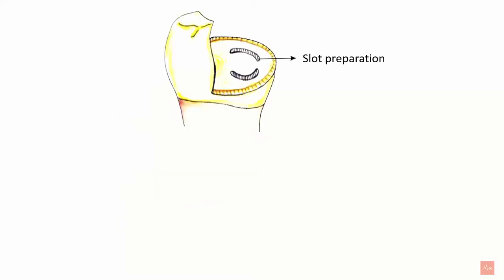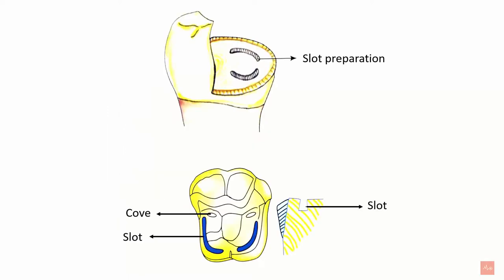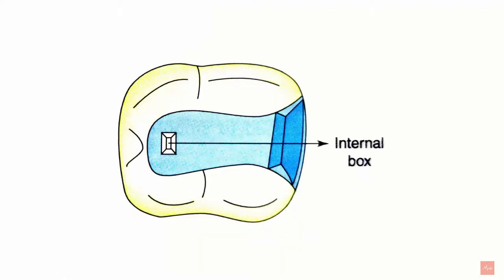The second secondary retentive feature is slot preparation. Slot preparations are retention grooves placed on the horizontal surface or horizontal plane along the gingival floor, just beyond the dentino-enamel junction. They are usually used in cases of short crown height.